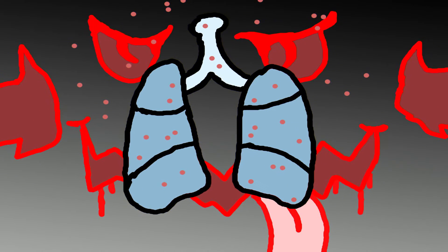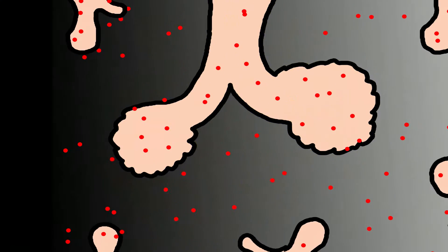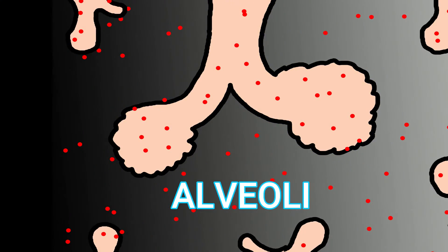The virus, once it enters the respiratory system, infects the lungs, where it starts infecting the cells that protect the alveoli, or sacs that help you breathe.